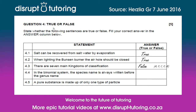4.4 reads: in the binomial system, the species name is always written before the genus name. This is false, because you actually write the genus name before the species name — it's the other way round.